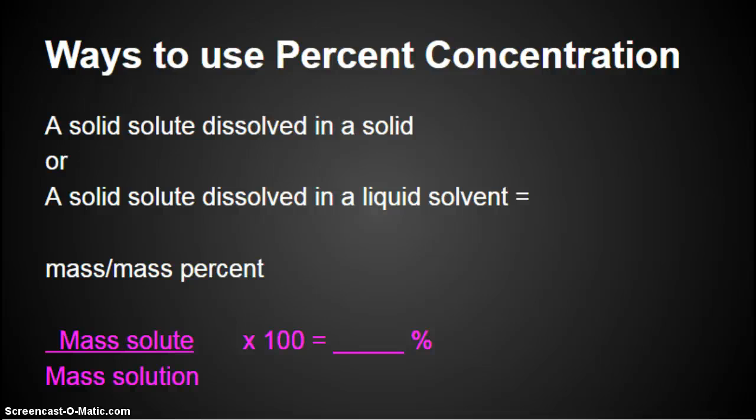We talked a little bit about this in the very first lesson of Unit 3 when I talked about solutions. So if we have a solid solute dissolved in a solid or a solid solute dissolved in a liquid solvent, we can use mass-mass percent. The formula is mass solute divided by mass solution times 100, and that equals a percent.